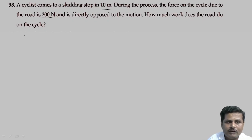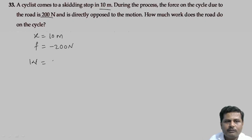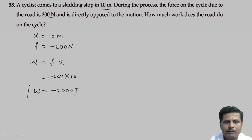The distance traveled by the cycle is 10 meters and the force exerted by the road on the bicycle is negative because it is a frictional force, so 200 Newton. Work done equals force into displacement, so we write minus 200 into 10, which equals minus 2000 Joule. This is the work done by the road on the bicycle.